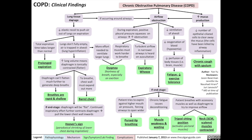The lung tissue damage caused by COPD reduces the elastic recoil ability of lung tissue, which reduces the lungs' ability to push air out on expiration. As a result, the total expiration time takes longer than normal, which can be observed as a prolonged expiratory phase, and the lungs don't fully empty, resulting in air being trapped inside the alveoli — otherwise known as lung hyperinflation.